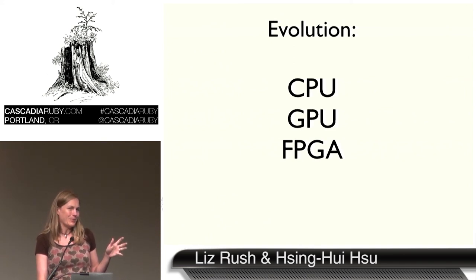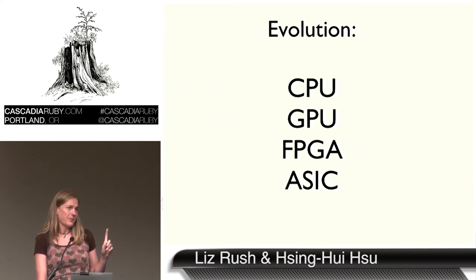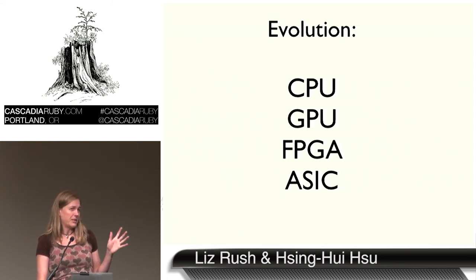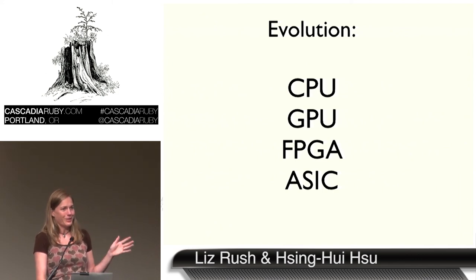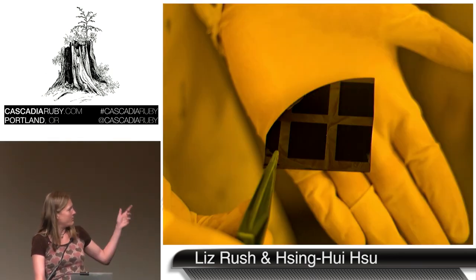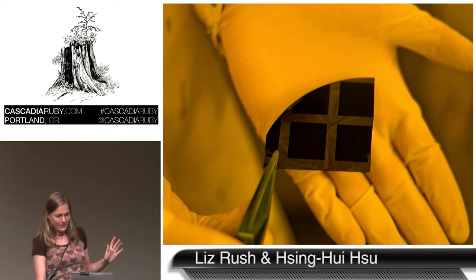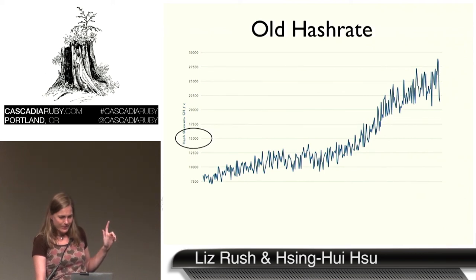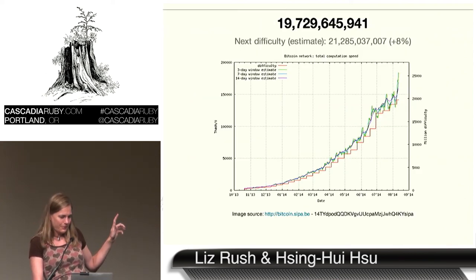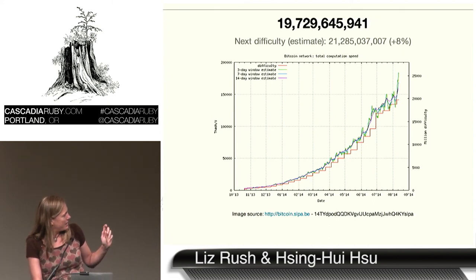FPGAs — field-programmable gate arrays — are hardware that runs faster than your GPU because you can tell it to do fewer things. ASICs you design to do just one thing. Our specialized chips could do about 400 to 600 gigahash — basically as much as about 70,000 Intel chips — except an Intel chip can do 70,000 other things and ours could just do the one thing, but real fast. We sent it off to Taiwan and had it manufactured in a facility that does 28-nanometer silicon. And it was awesome until we went bankrupt.